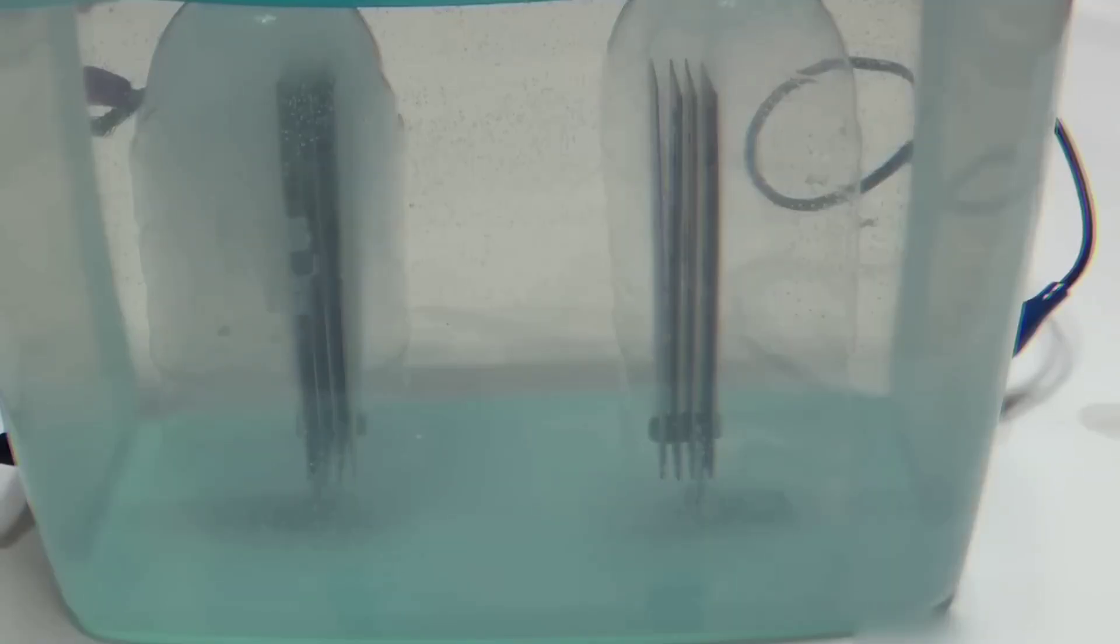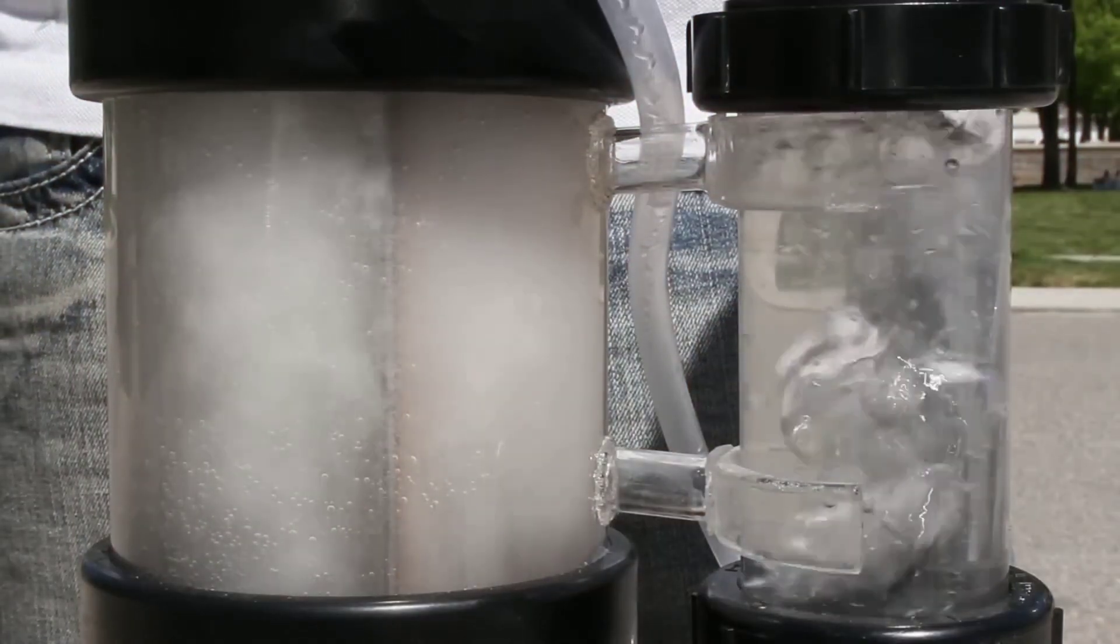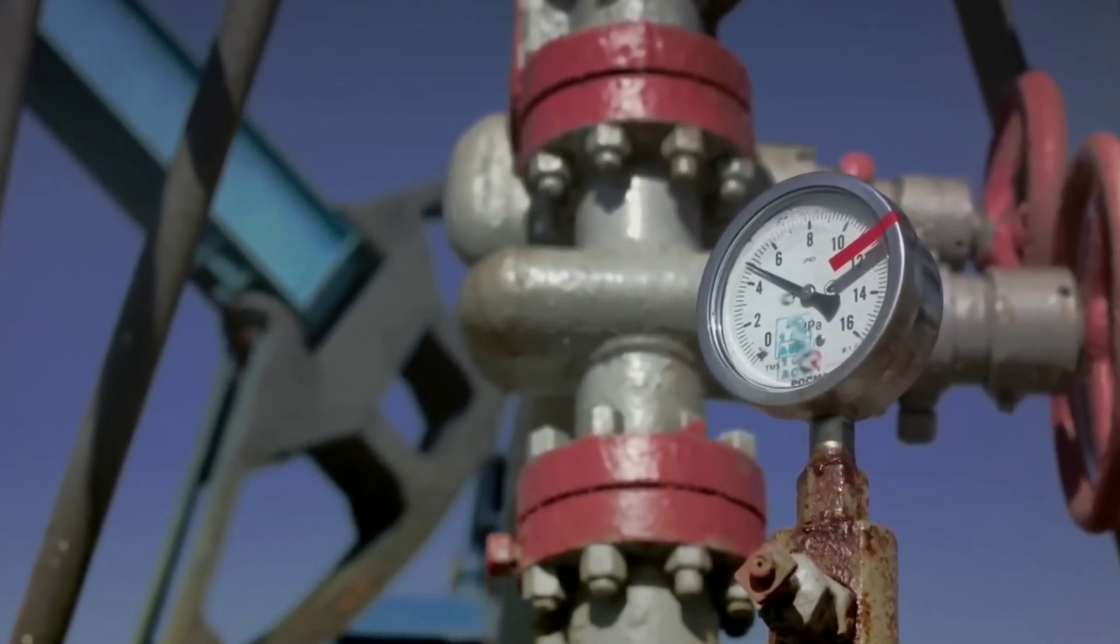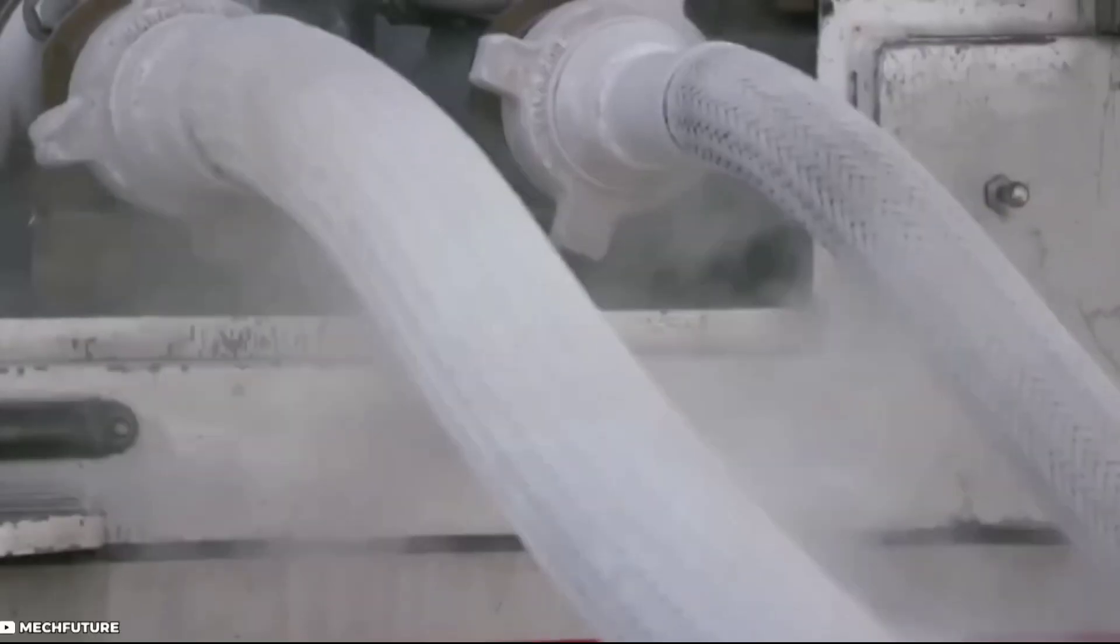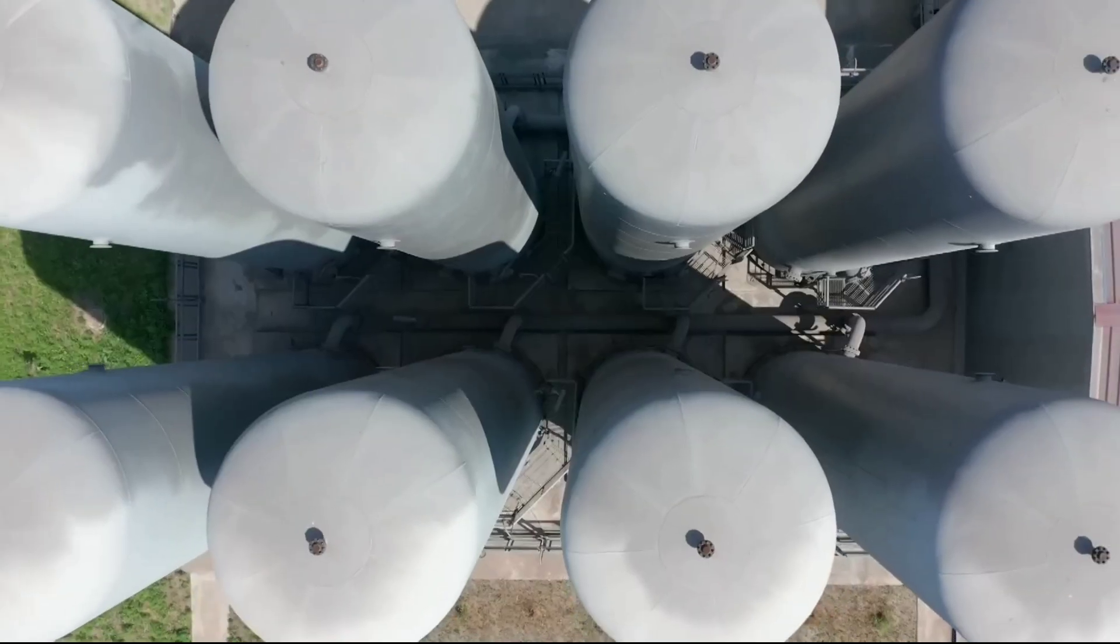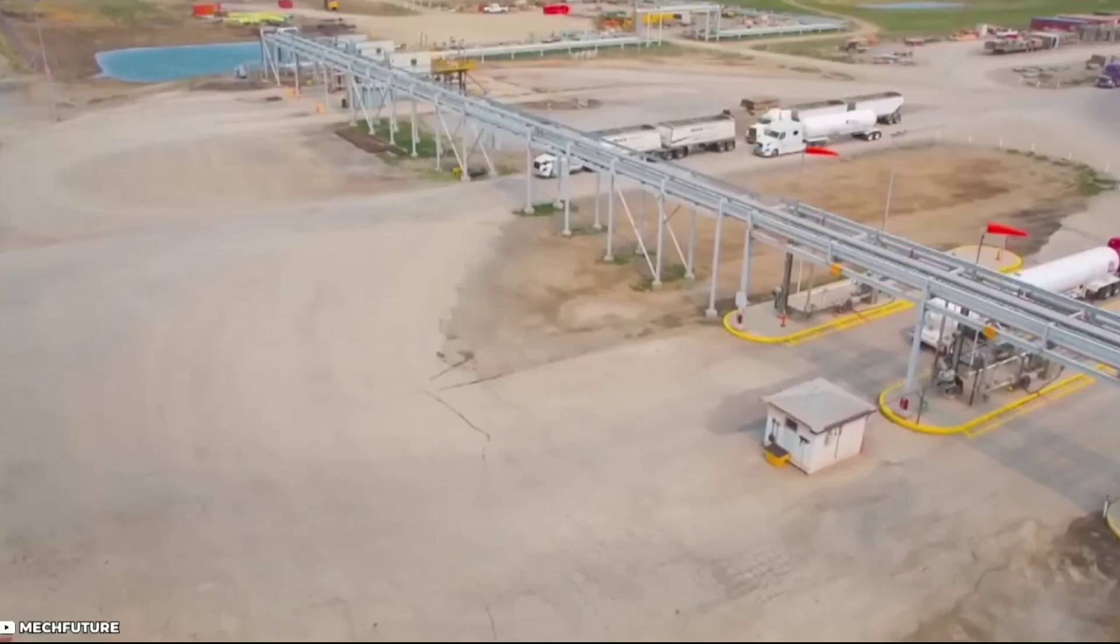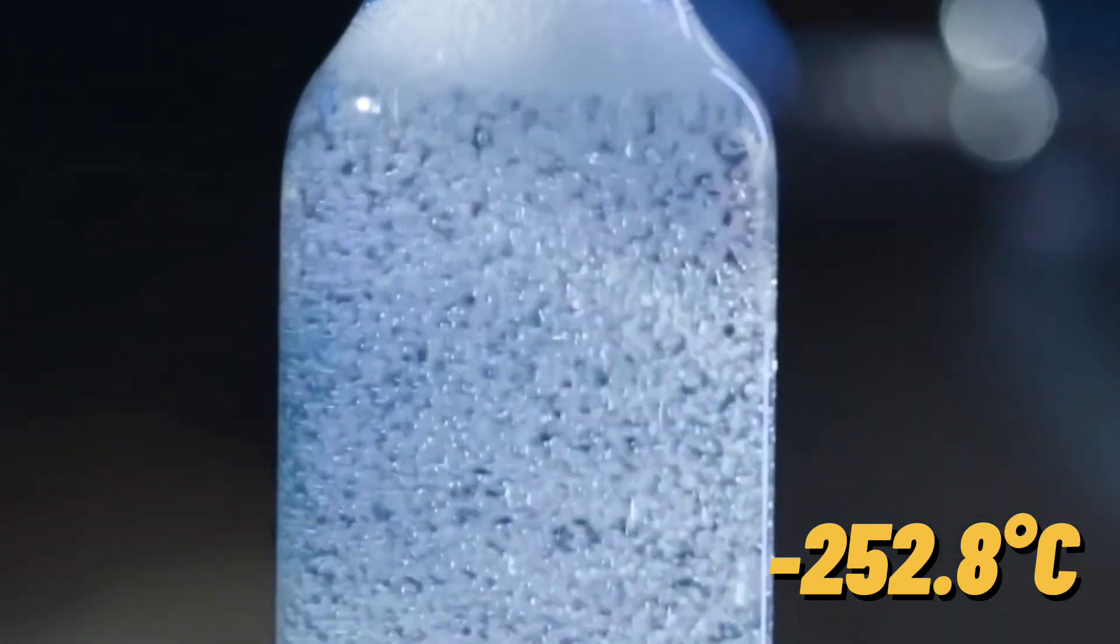Hydrogen may have a lot of energy in its atoms, but it also takes up a lot of space in its gas form. To transport and store hydrogen efficiently, it needs to be compressed or liquefied, which is not easy or cheap. Most hydrogen used in industries or vehicles is either produced on-site or delivered by trucks with large gas cylinders. These cylinders have to withstand high pressures of 300 to 500 bars to hold enough hydrogen gas.